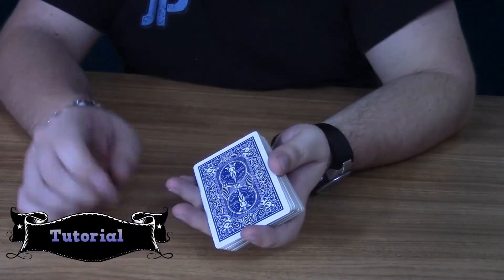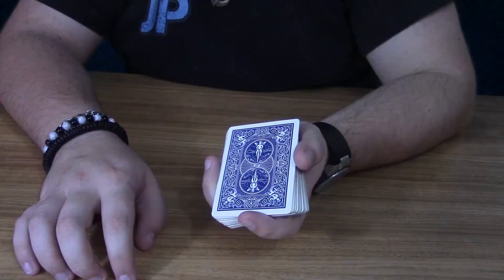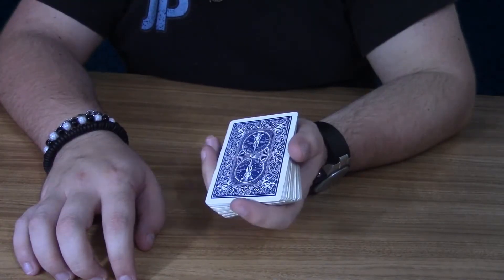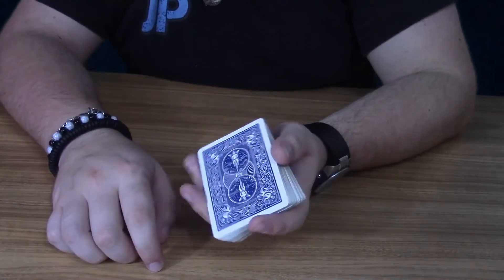Welcome to the tutorial of the trick. For this trick, all you're going to need is a blank deck. Now, you can pick these up at magic shops. I found them at, I think Dollar Tree had them at one point. So just pick one of those up and you're ready to begin.